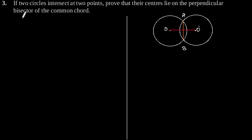Exercise standpoint 3, Question number 3. If two circles intersect at two points, prove that their center lies on the perpendicular bisector of the common chord.